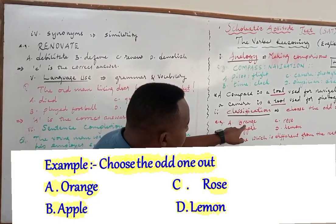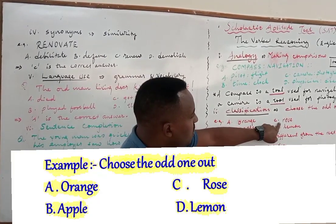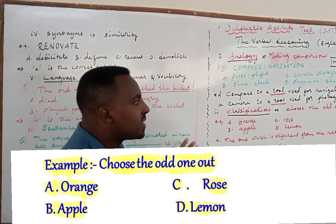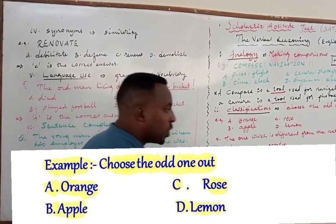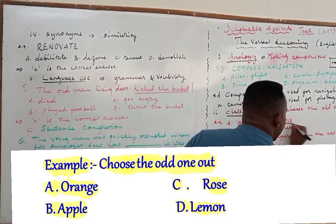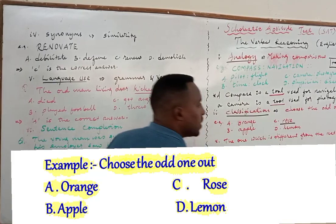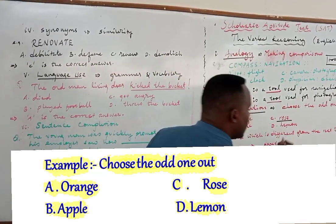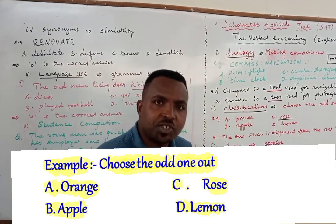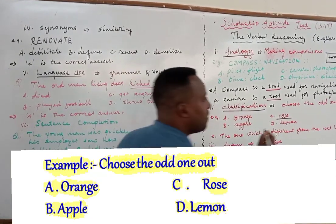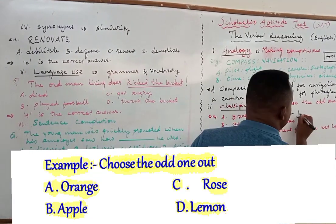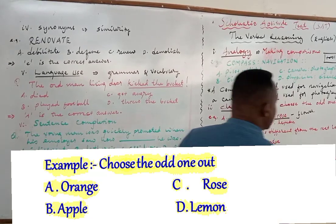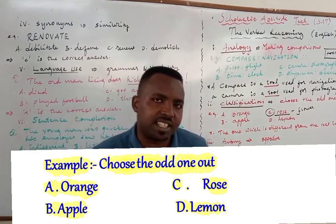Let's see: orange, apple, rose, lemon. Which one is different? Obviously, rose is different. Why? Because it's a flower. The rest — orange, apple, and lemon — are all fruits. Rose is a flower, so it is the one which is different. It's very easy.